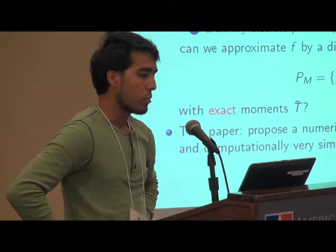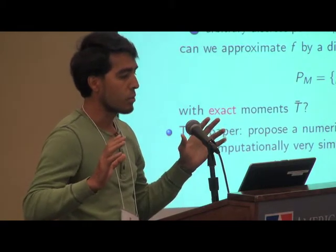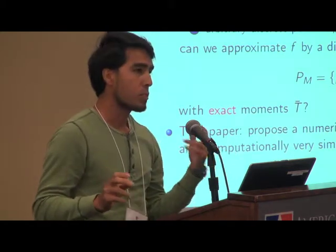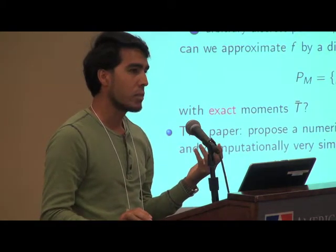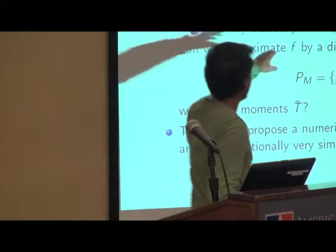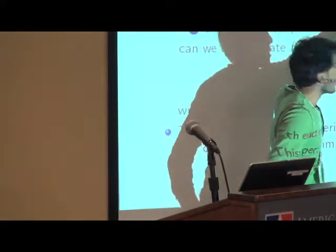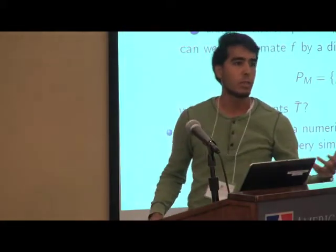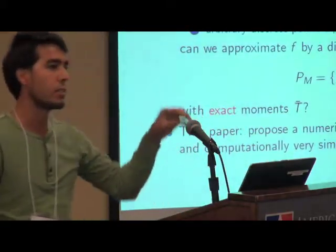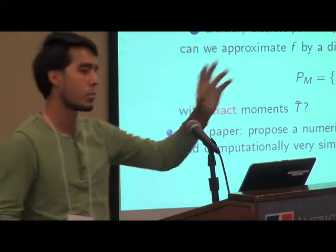So, now, mathematically, the problem is as follows. Suppose that you are given a continuous density F. And suppose that you are given some moments, T, T bar. So, here, T bar is the value of the moments. And the T of X is the function that defines the moment. So, for example, if you want to match the first and second moment, then T of X is X and X squared, for example.